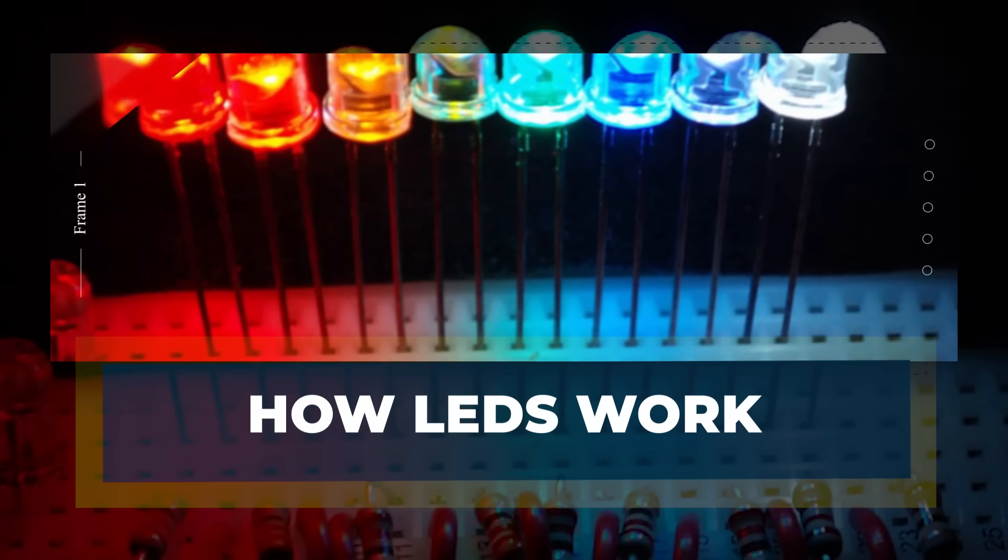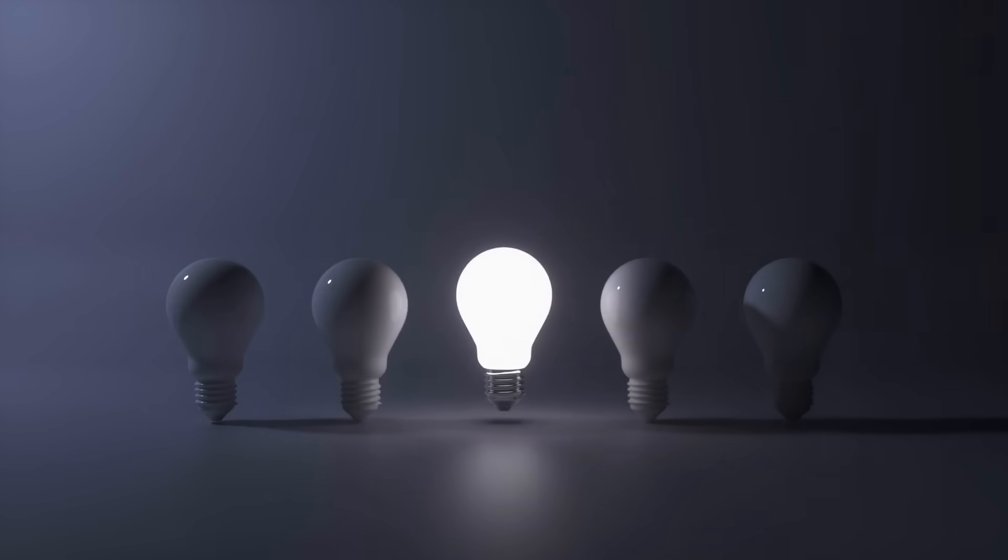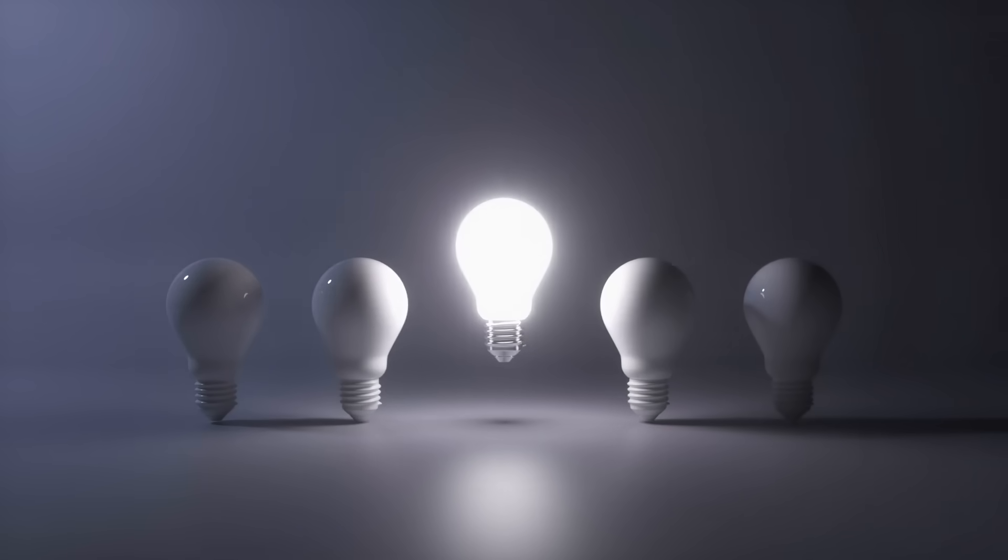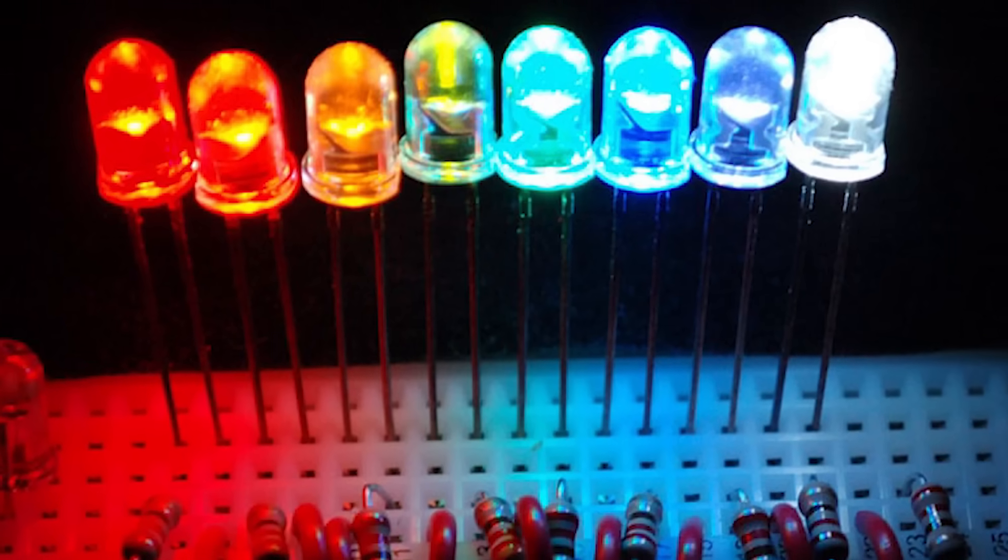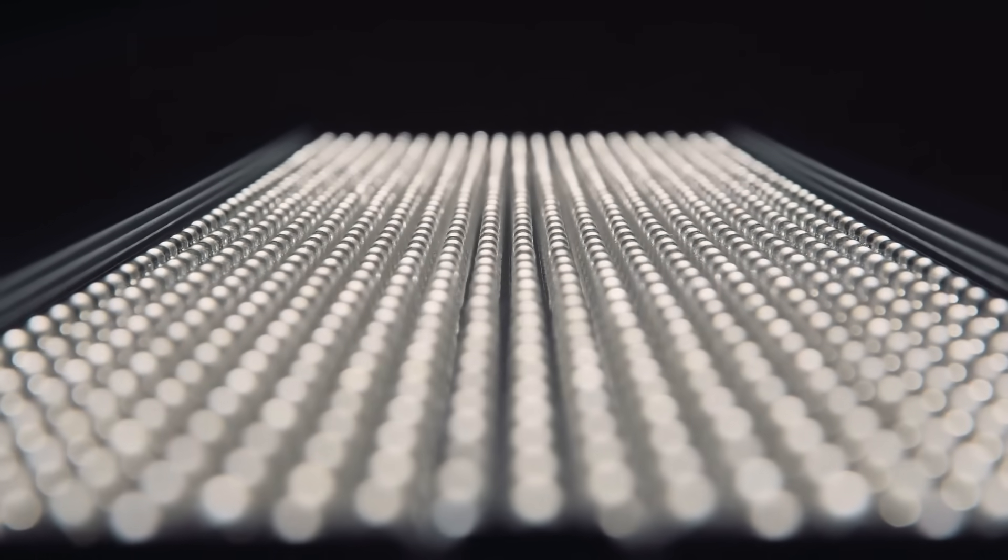How LEDs work. We often take light for granted, flip a switch, and it's there. But behind every LED bulb is a carefully crafted dance of electrons. LEDs, or light-emitting diodes, work through a process called electroluminescence.